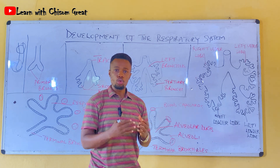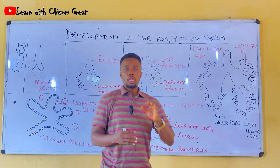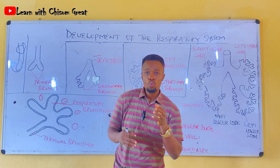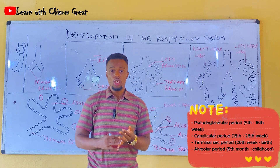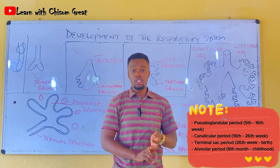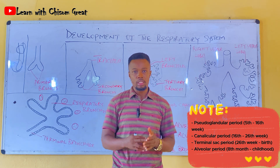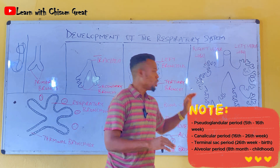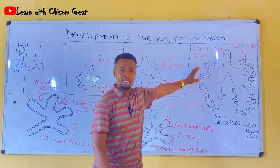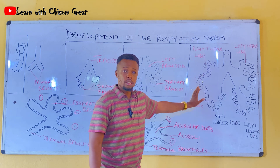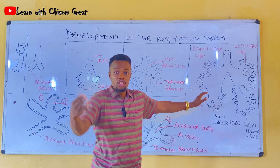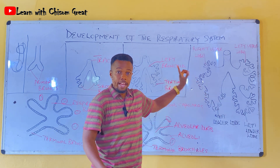The maturation of the lungs occurs in four stages: the pseudoglandular stage, the canalicular stage, the terminal sac stage, and the alveolar stage. In the pseudoglandular stage, the tertiary bronchi have been formed into different generations of tertiary bronchi, as described. These tertiary bronchi are very tiny.